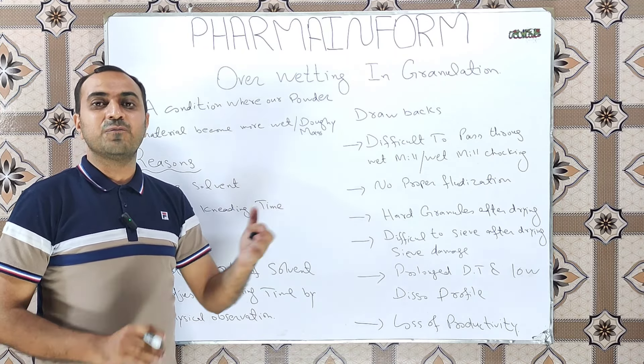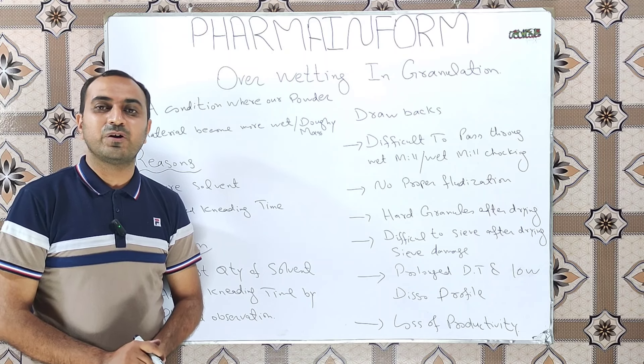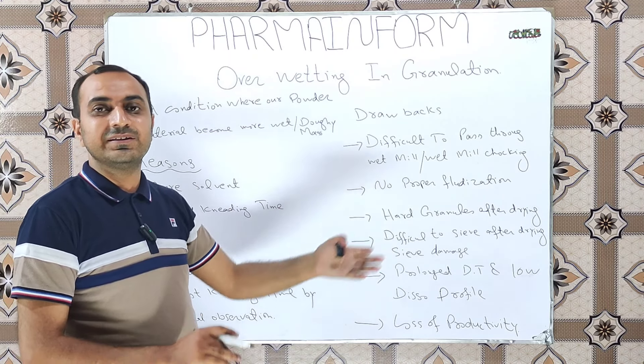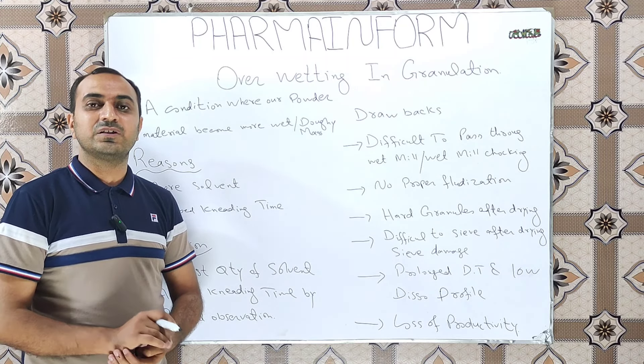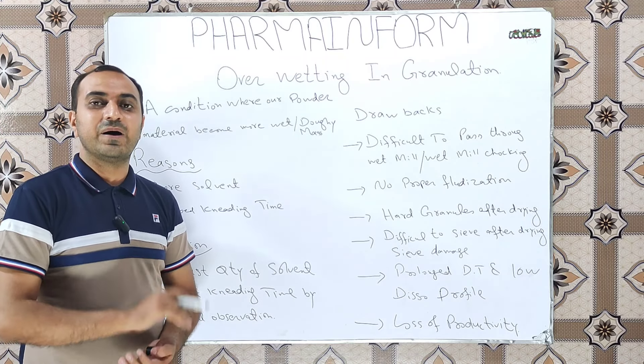So why does overwetting defect occur? What are the reasons for overwetting? There are two most common possible reasons. One is excess solvent. If we add more solvent to the powders for wetting purposes, it will result in overwetting or large lumps production or doughy mass.